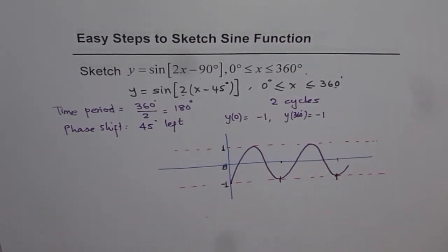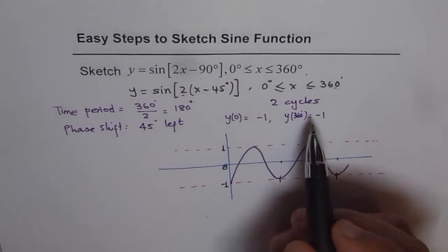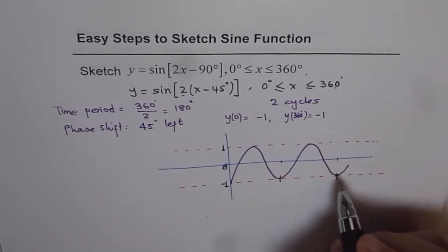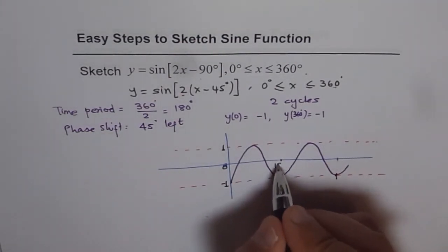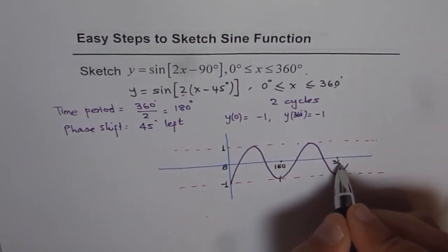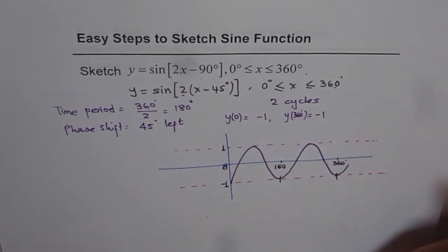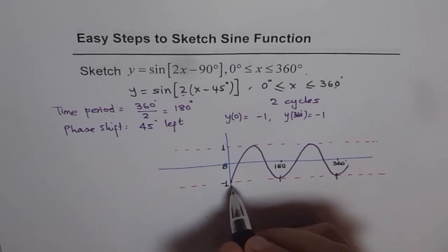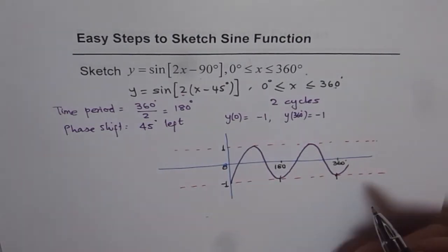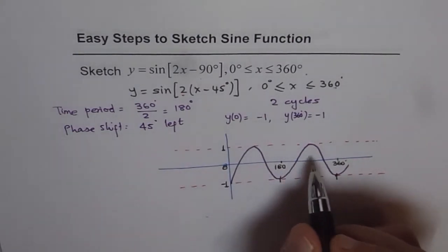And we knew that we are going to make 2 sine waves which will start from minus 1 and end at minus 1. Its time period is 180. So this point is 180 for us and this is 360 degrees. That is a maximum value of 1, minimum value of minus 1. So you get your result. That is the answer.